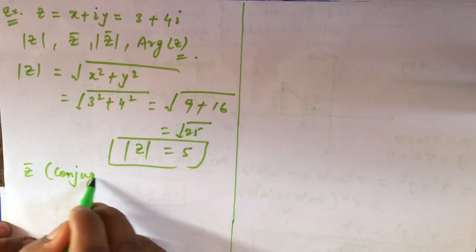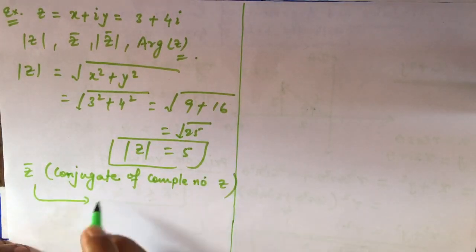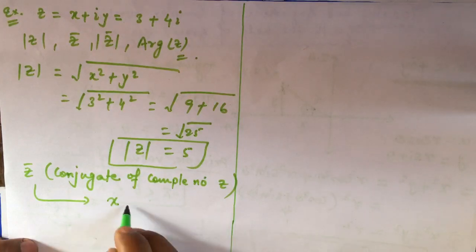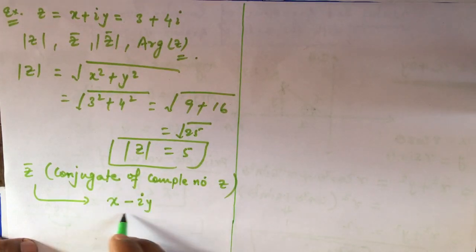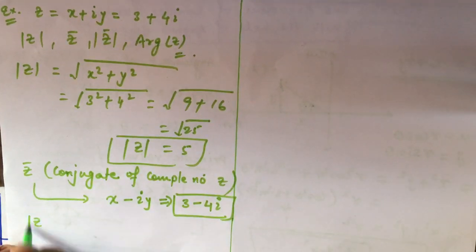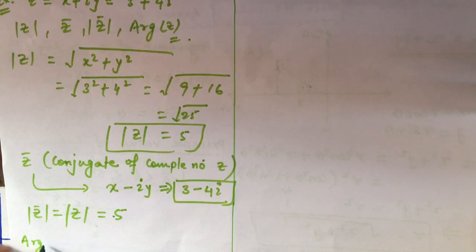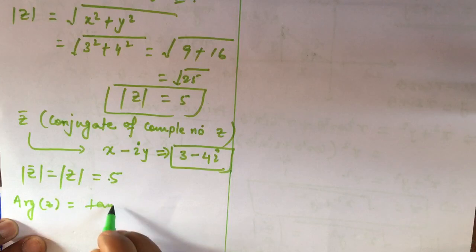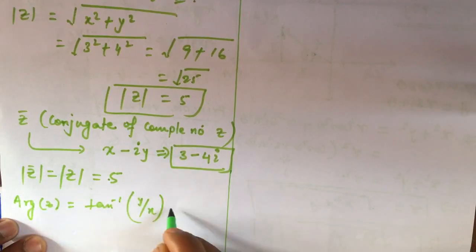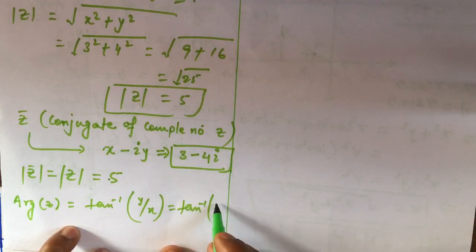Now for z-bar, the complex conjugate, we change the sign of the imaginary part, so z-bar = 3 − 4i. The modulus of z-bar is the same as the modulus of z, so |z-bar| = 5 as well. Now we need to find the argument of z.